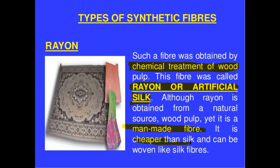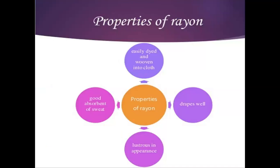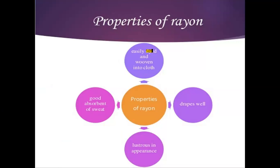Rayon can be woven like silk fiber and can be dyed in any color. It is cheaper than silk. It can be used in any color and can be woven into clothes easily. It is also easily absorbed by sweat.